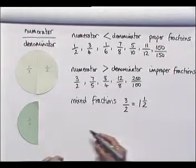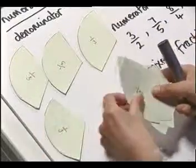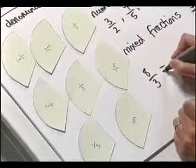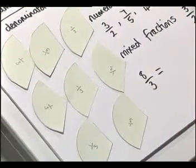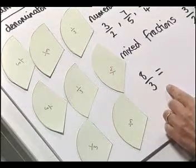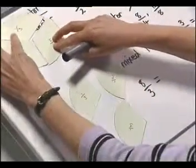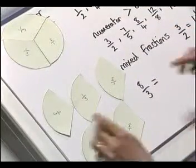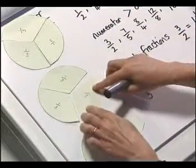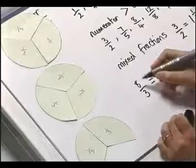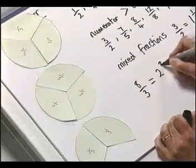Let's have a look at another example. Let's say we had eight thirds. How else can we write that — how do we write that as a mixed fraction? Well, what we're looking for is how many whole ones we've got. If something's been divided into three pieces, it takes three pieces to make one whole. So that's one whole one, and there we have another whole one — that's two — and we've got two thirds left over. So eight thirds is exactly the same as two and two thirds.